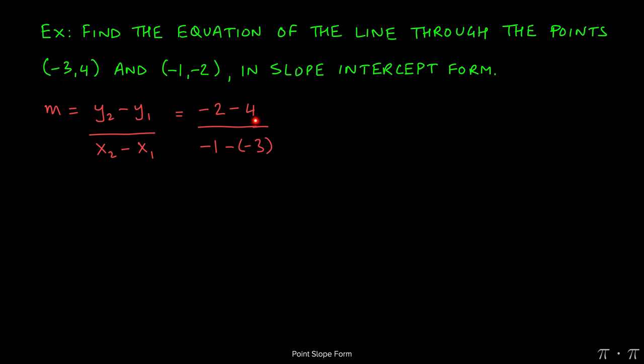Negative 2 minus 4 gives us -6. Negative times a negative makes it a positive, and -1 plus 3 gives us a positive 2. As we can see here, this simplifies to -6 over 2, which finally cleans up to -3. So the slope of the line that passes through the two given points is -3.